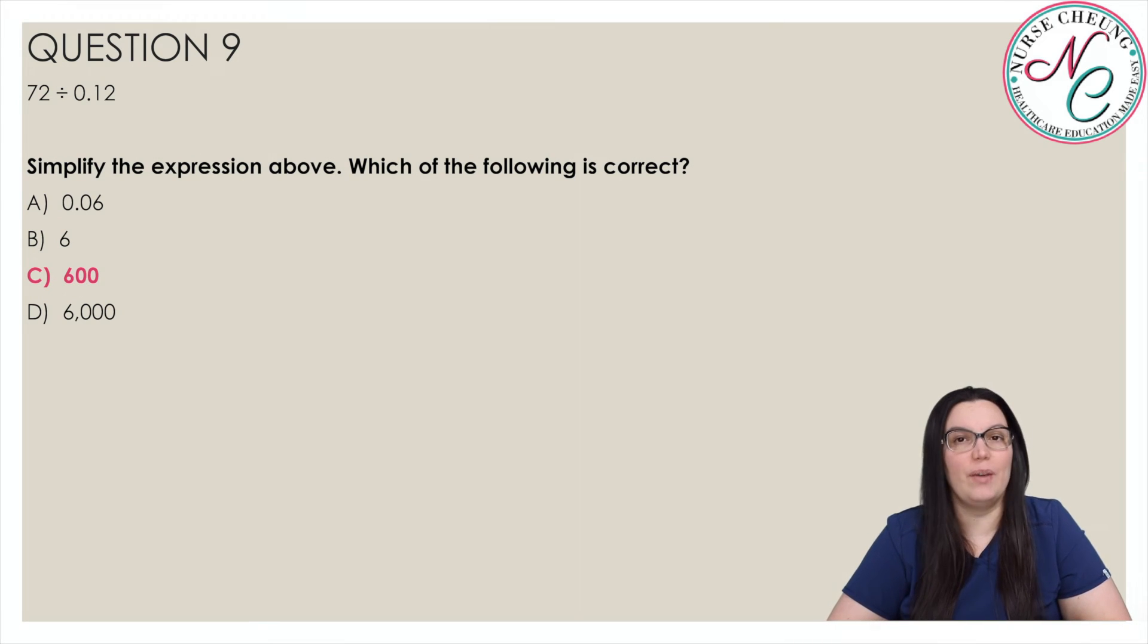We have to first set up our problem, 0.12 divided into 72. Next, for both numbers we move the decimal points to the right two places. We need to add two zeros to the end of 72 creating 7,200. Now we divide getting our correct answer 600.